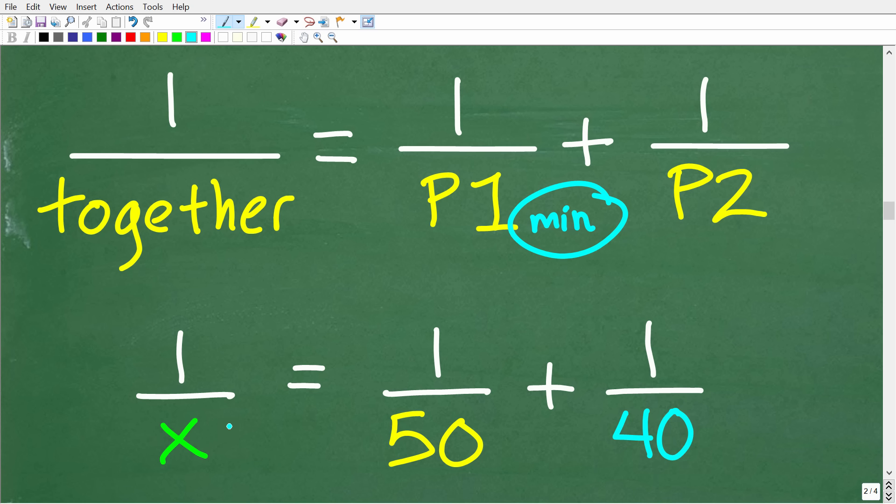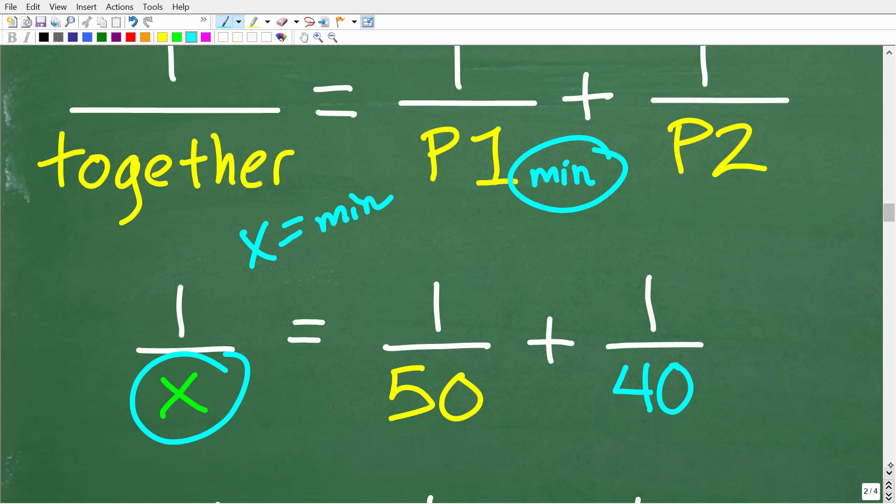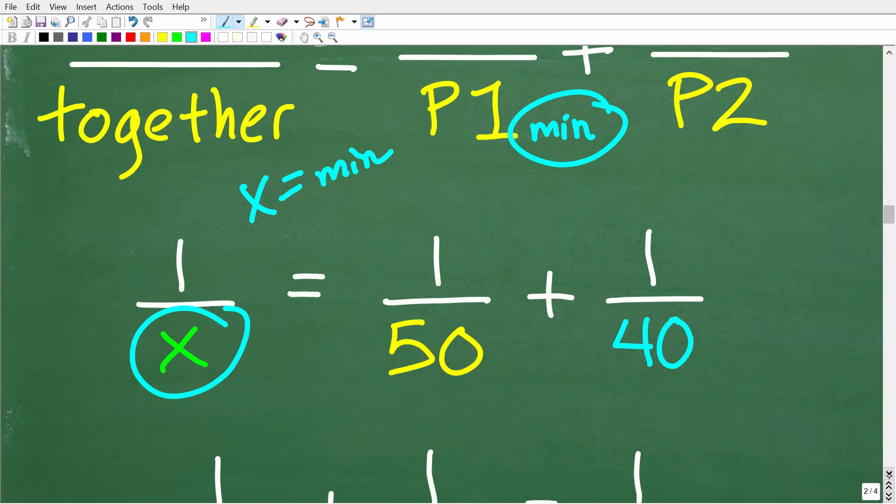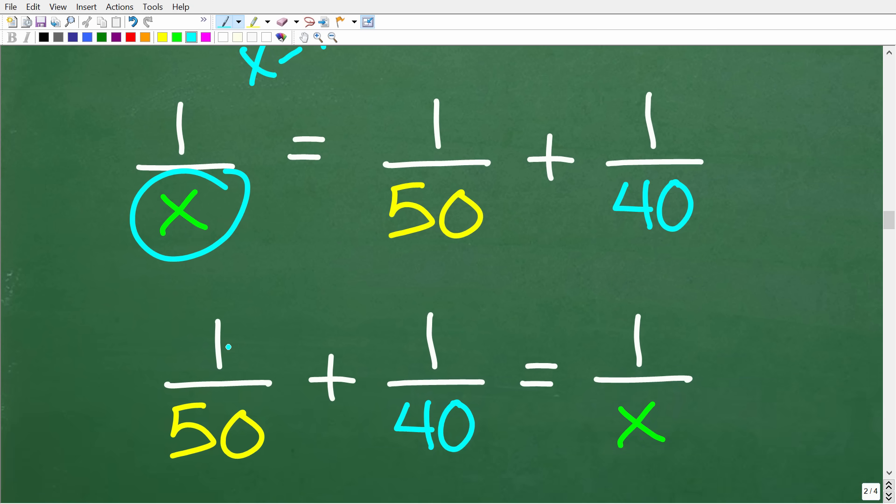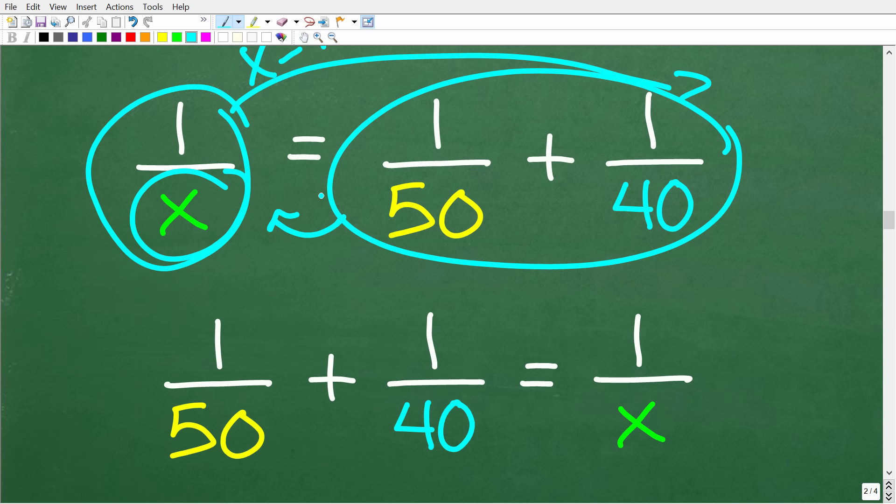Now, just kind of keep in mind that our units of measure here are in minutes. So, when we solve for X, X will be in minutes as well. So, what we have here is 1 over X is equal to 1 over 50 plus 1 over 40. And I'm going to go ahead and actually write this equation this way. So, we have 1 over 50 plus 1 over 40 is equal to 1 over X. It's the same thing. I'm just moving this to this side of the equation and this to the other side.